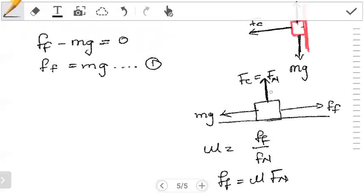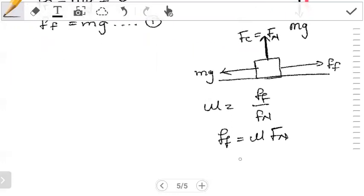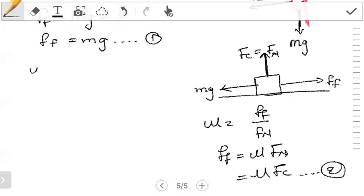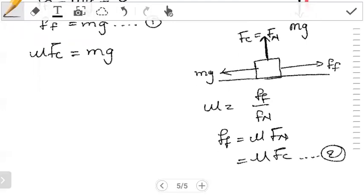So from here we notice that the force of friction is equal to mu times the force normal. But from our diagram we did point out to say that the force normal is actually equal to the centripetal force. So this expression now becomes force of friction is equal to mu centripetal force. So now when we get this and substitute it into equation one, what happens is now we end up with mu, the left hand side, mu centripetal force equal to mg.